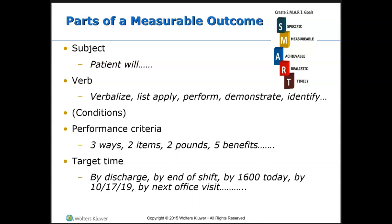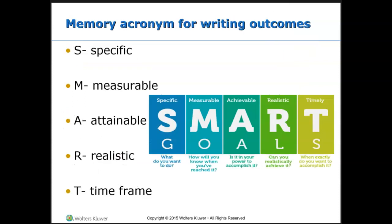You may also include the condition or circumstances in which the outcome is to be achieved, though this is not always needed. Performance criteria describes what you can measure by observing, listening, or actually measuring. Your target time is when you expect the patient to achieve that outcome or goal. Make sure it's realistic and achievable by your patient, or you're just wasting time — and you risk exacerbating the problem by setting unachievable goals.